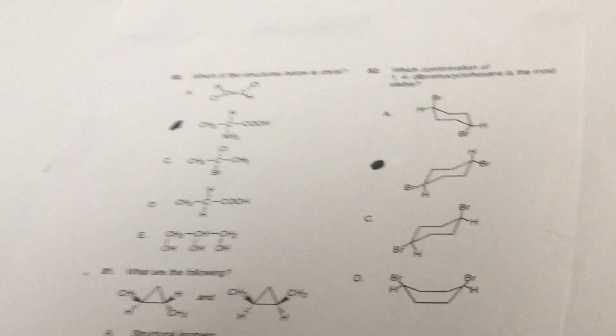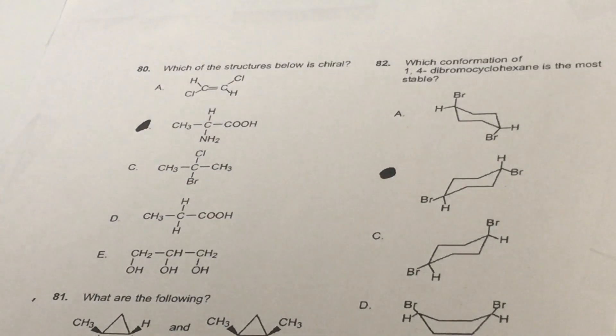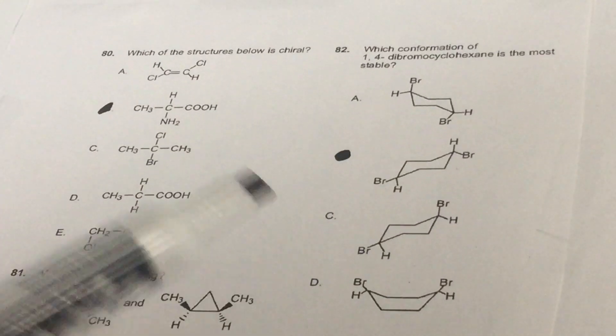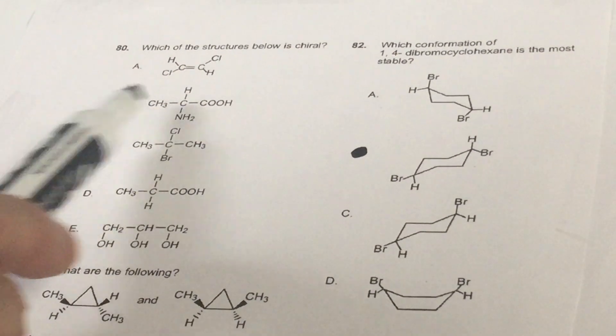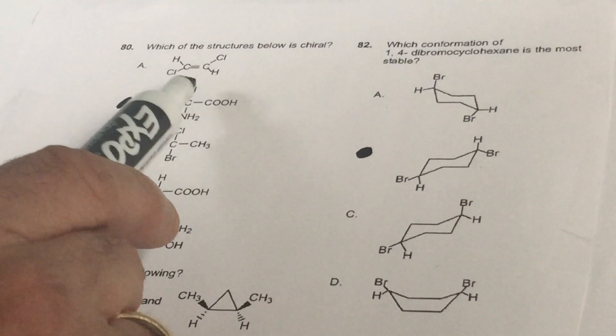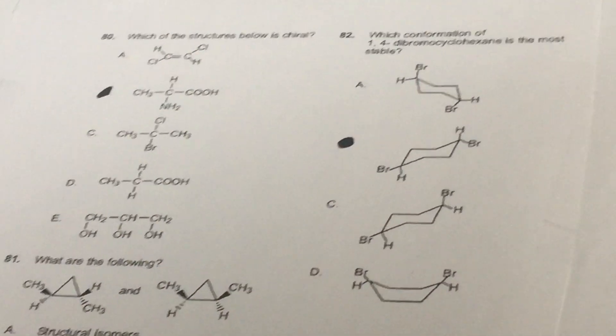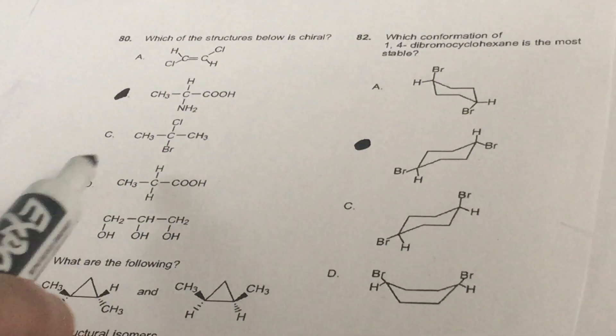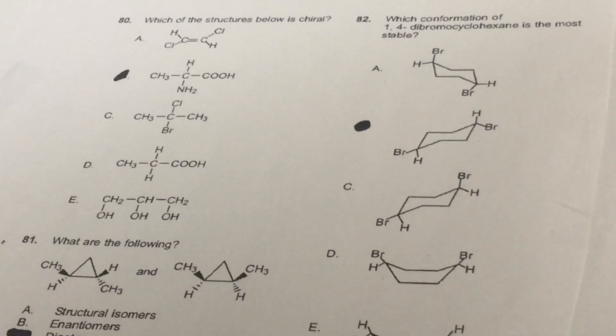We're on 80. Which structure is chiral? A chiral carbon in this parlance means we're always going to assume a carbon is chiral. Notice in B, there's four different groups. As you can see, the carbon in the middle has an H, a methyl, carboxy, and an NH2 group. None of the other ones have four groups that are different. For example, D, there's two Hs. So that would be a chiral carbon.